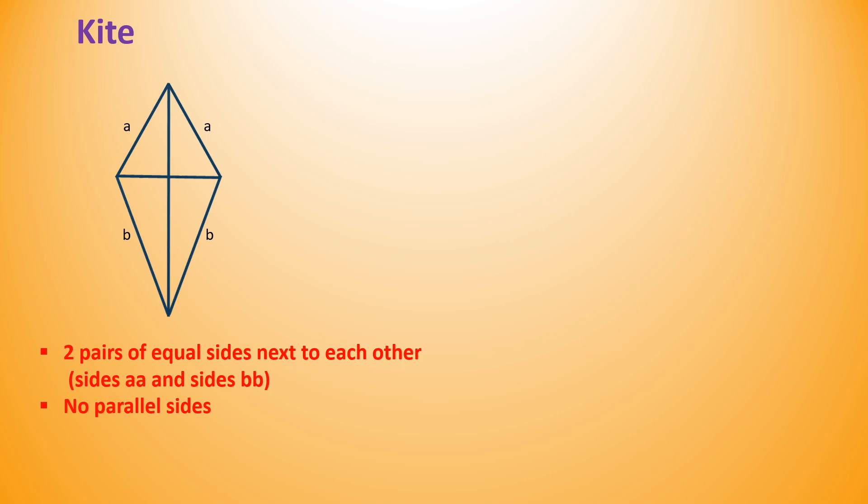Kite is another 2D quadrilateral shape which is less common. It has two pairs of equal sides next to each other. There are no parallel sides in kite. Kite is the best example of this shape.